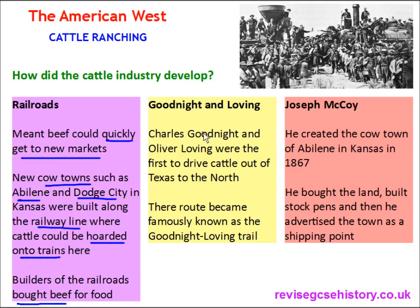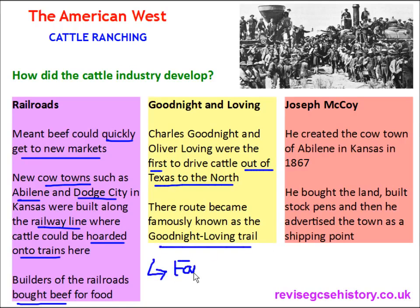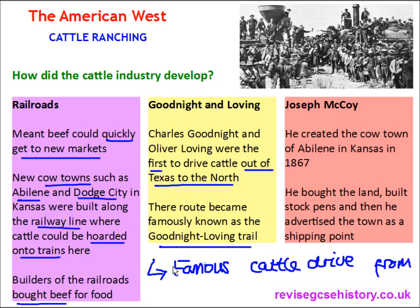Another factor is Goodnight and Loving. Charles Goodnight and Oliver Loving were the first to drive cattle out of Texas north to meet the markets in the north. Their route on the cattle drive became famously known as the Goodnight-Loving Trail — a famous cattle trail from Texas to the north, named after them as the first people to make that journey.